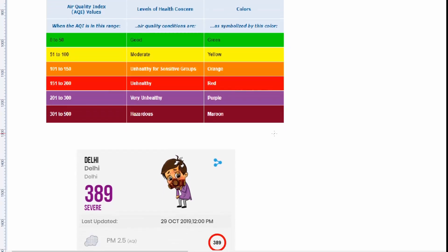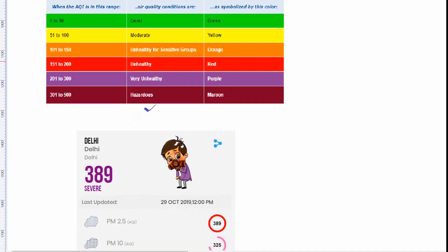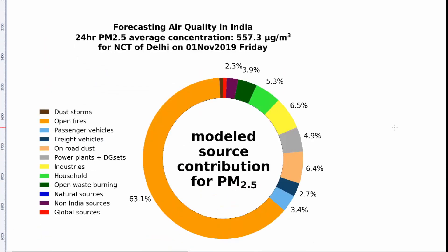In Delhi, PM 2.5 reached the level of 389 on 28th October. After Diwali, it reached to 400.